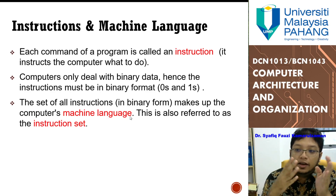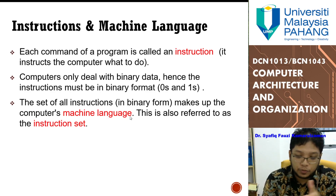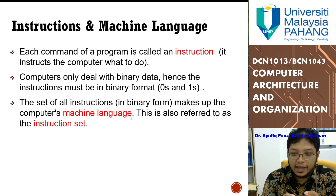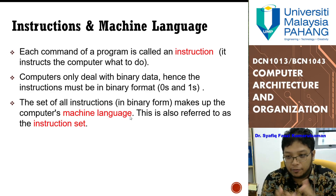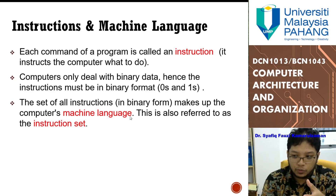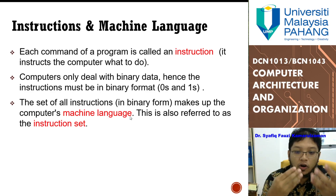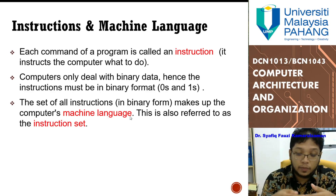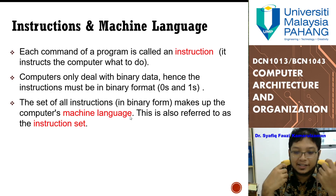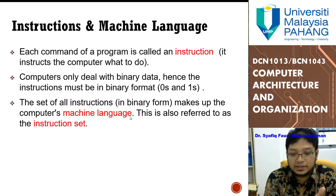Computers only deal with binary data, hence instructions must be in binary form — 0 and 1. The set of all these instructions makes up the computer machine language. All of this set of instructions is what we call an instruction set. Basically, what they call a program is a set of instructions for the PC to conduct.